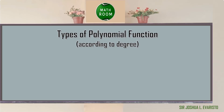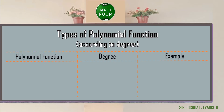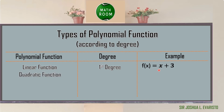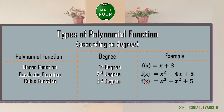Just like polynomial equations, we also have different types of polynomial functions according to degree. The first type is a linear function, where the degree is 1. Example: f(x) = x + 3, where the leading term is x. Next is a quadratic function with degree 2. Example: f(x) = x² − 4x + 5, where the leading term is x². Next is a cubic function with degree 3. Example: f(x) = x³ − x² + 5, where the leading term is x³.